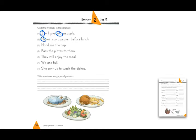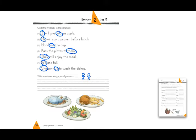Now we have one more thing on this page: write a sentence using a plural pronoun. So if you use a plural pronoun, is it with one person or more than one? It is with more than one. So in your sentence there should be at least two people — it could be 'we,' 'they,' 'them,' or 'us.'